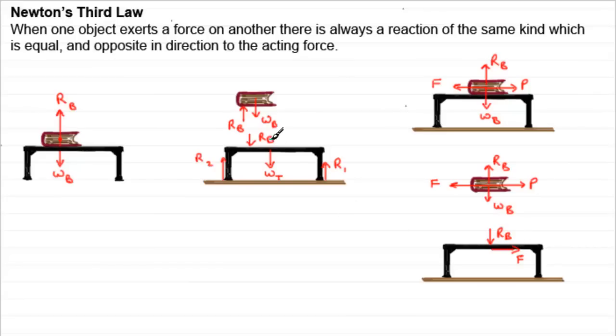There'll be the other forces that we had here. There'll be the weight of the table acting downwards, WT. And there'll be those contact forces here, R1, R2, pushing upwards. So this would be the kind of force diagram that we would have for the forces acting on the table.